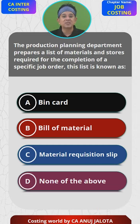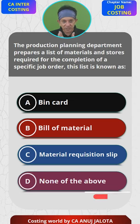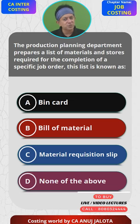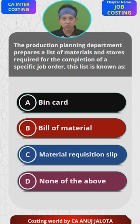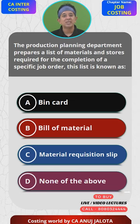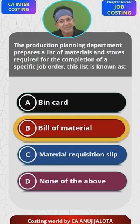Based upon the bill of material, a factory requests the stores department to issue the required material. That request is in the form of a material requisition slip, which is given to the stores department and then they issue the material. So the question asks: the production department prepares a list of materials required — that list is called the bill of material. Therefore the answer is B.